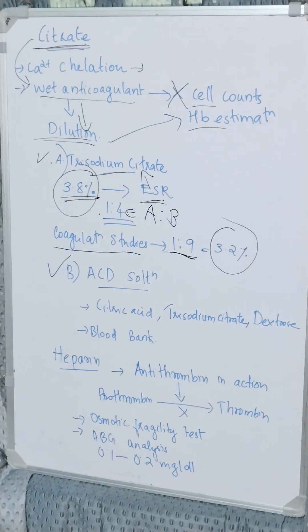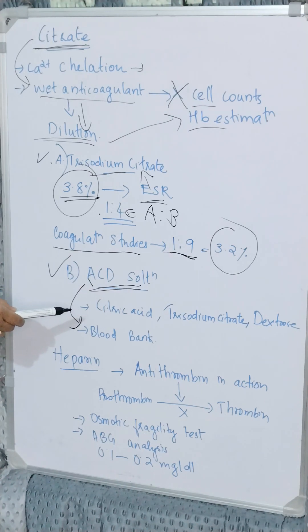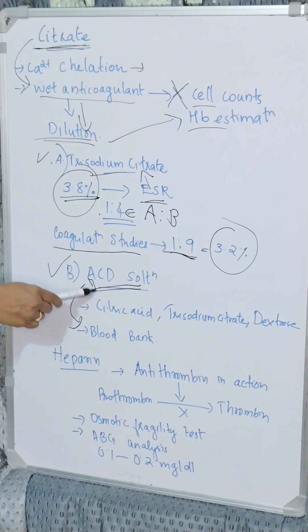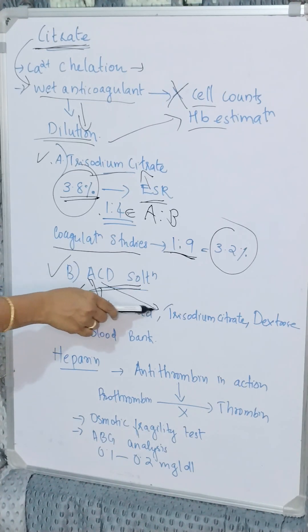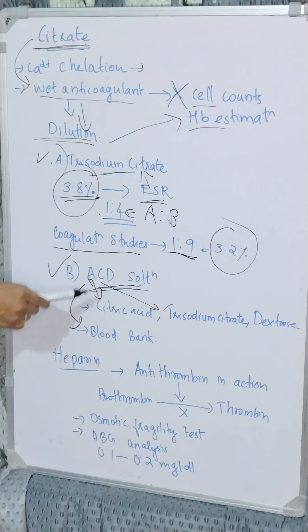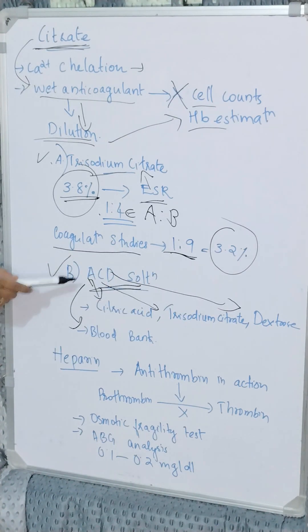ACD solution is used in blood banks. ACD stands for Acid Citrate Dextrose — 'A' is citric acid, 'C' is trisodium citrate, and 'D' is dextrose, hence the name acid citrate dextrose solution.